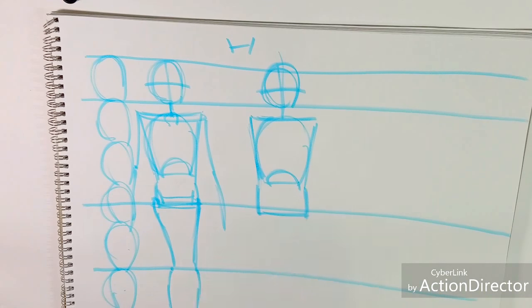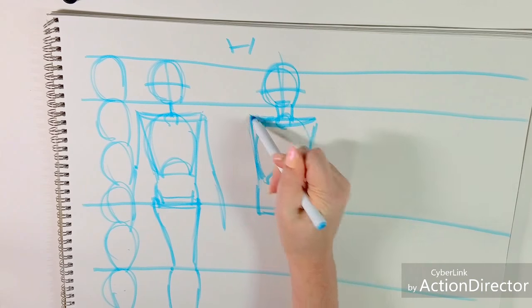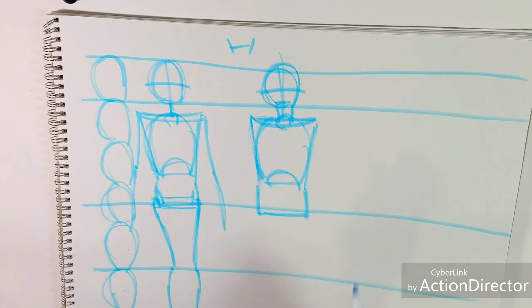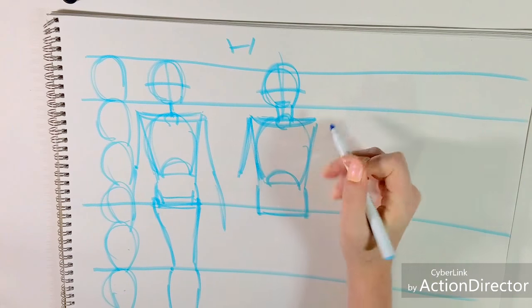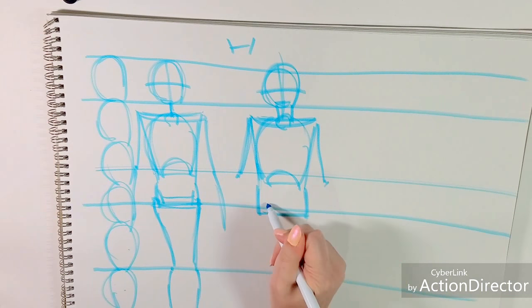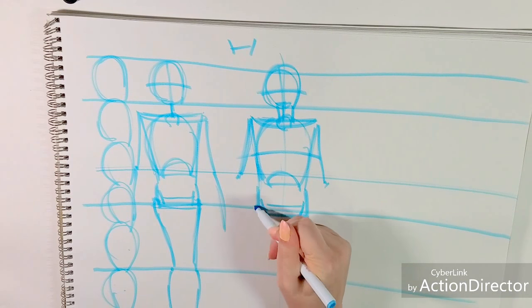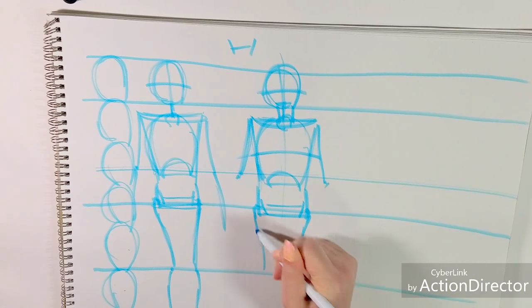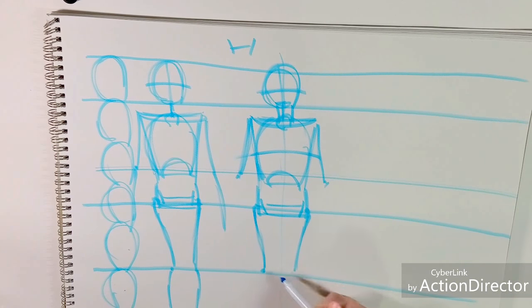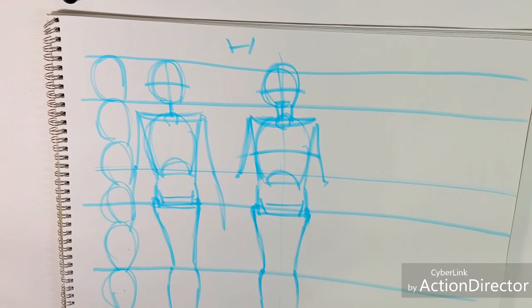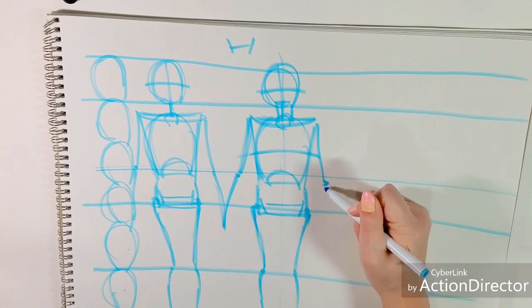I really recommend you guys practice this form in different poses. Use Croquis Cafe or use Pixel Lovely or Senshi Stock would be an excellent resource. And if you guys are interested, I can do a demonstration later on where I draw poses from Senshi Stock in the skeletal form. So I'm going to do another one of the skeletal form and I'll bulk him out like I promised. And for every drawing I do, I do this basic stick figure.